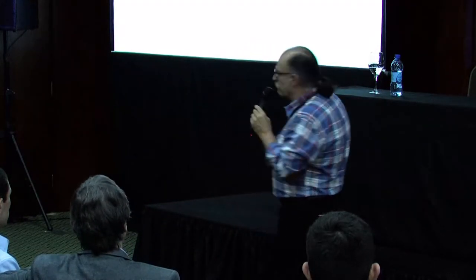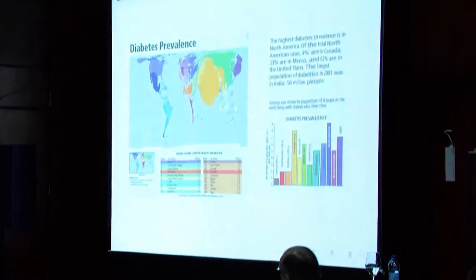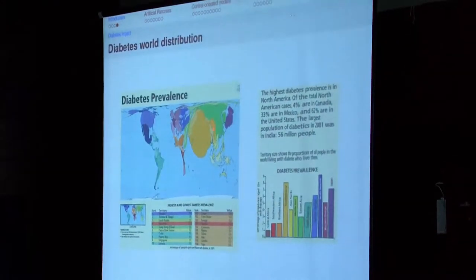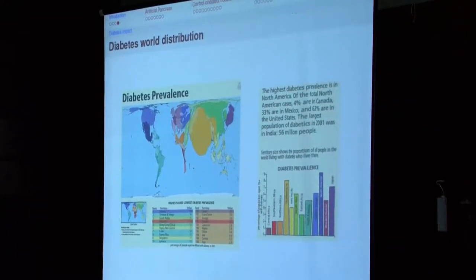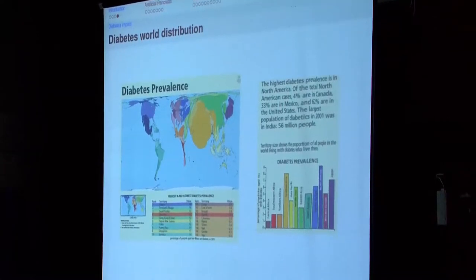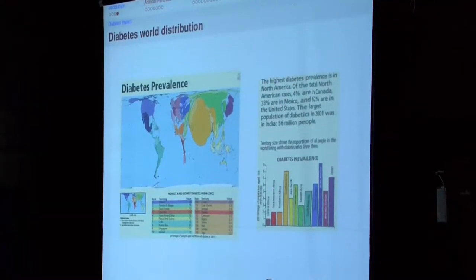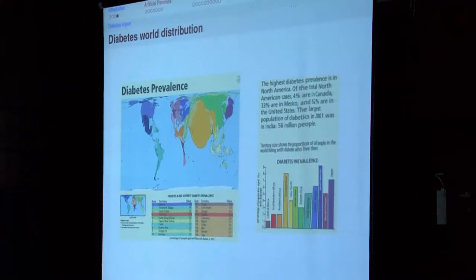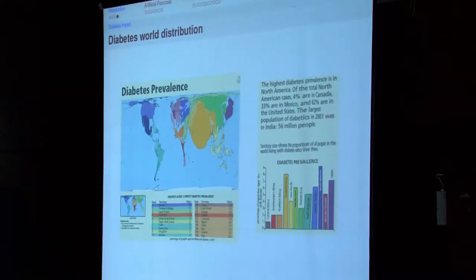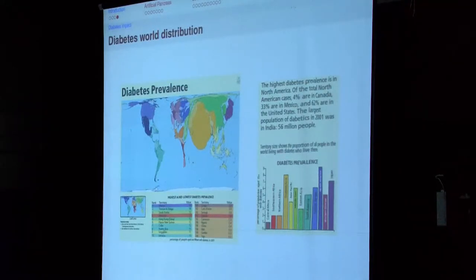This is a map showing the size of countries depending on diabetes prevalence. Countries like India, China, and the US have a lot of diabetes patients. In the world, there are approximately 400 million diabetic patients, and 10% have type 1 diabetes, meaning they are insulin dependent. In Argentina, we have 4 million people with diabetes, and around 400,000 have type 1 and are insulin dependent. That's why several groups around the world have been working in this area for the last 20 years.